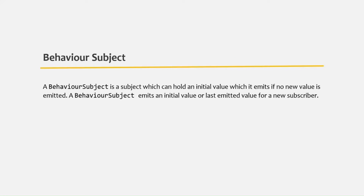A BehaviorSubject is basically a subject which can hold an initial value, and it emits that initial value when there is no new value to emit for a subscriber. Basically, a BehaviorSubject will emit an initial value or the last emitted value for a new subscriber.